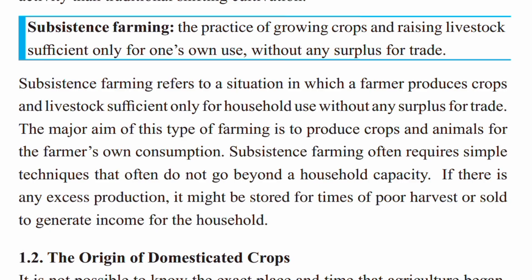Subsistence farming refers to a situation in which a farmer produces crops and livestock sufficient only for household use, without any surplus for trade. The major aim of this type of farming is to produce crops and animals for the farmer's own consumption.